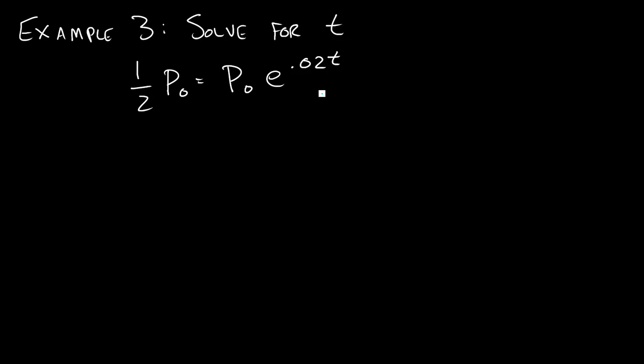So we have this exponential growth problem with a continuous growth rate of 0.02, so k is equal to 0.02, and we have some initial value that we don't know. And so we're trying to find how many years it's going to take to get to half of that initial value. And so understanding what's going on is good.